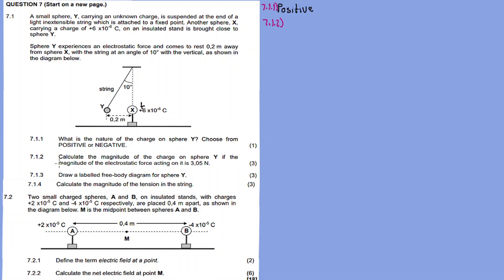7.1.2: Calculate the magnitude of the charge on sphere Y, if the magnitude of the electrostatic force acting on it is 3.05 newtons. Inside the Coulomb's law formula we have the two charges, sphere X and sphere Y. I'm given the force, I have the charge for X, this is a constant, and there's a distance between the two charges. So I need to calculate charge Y.